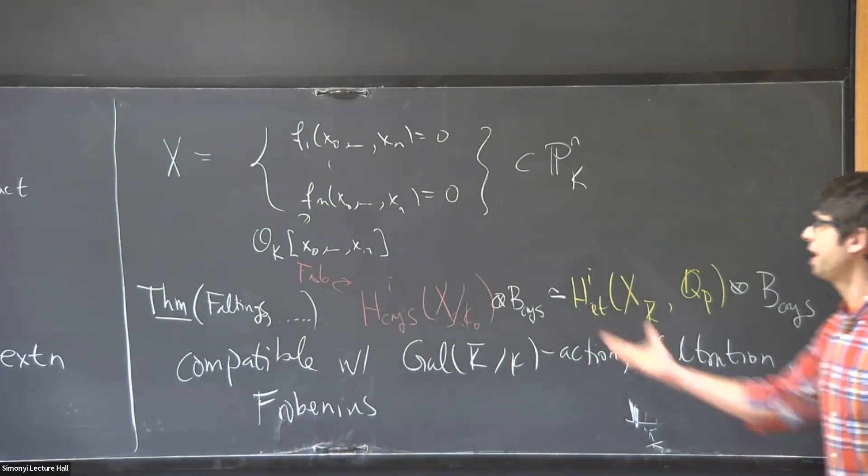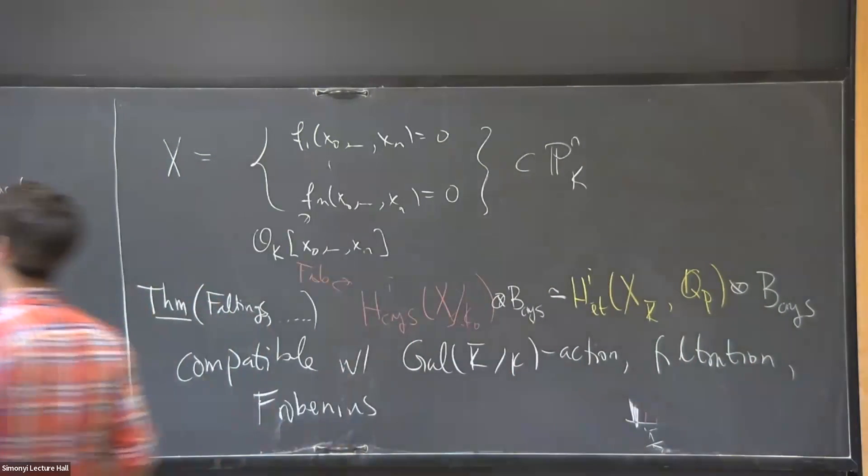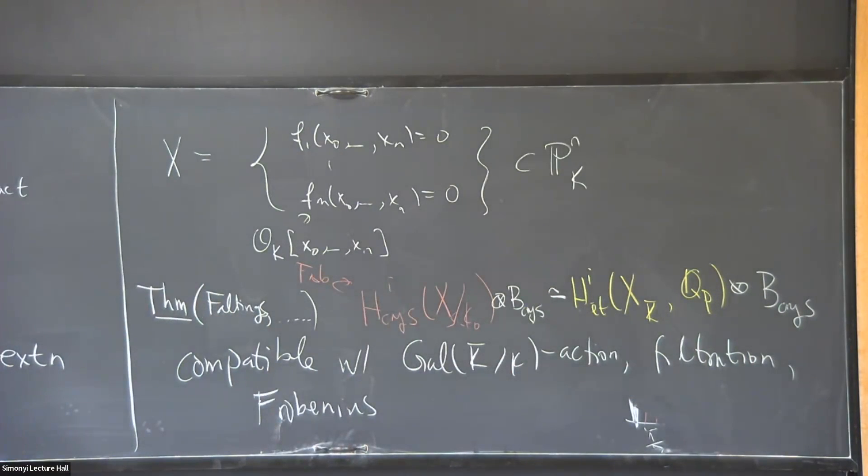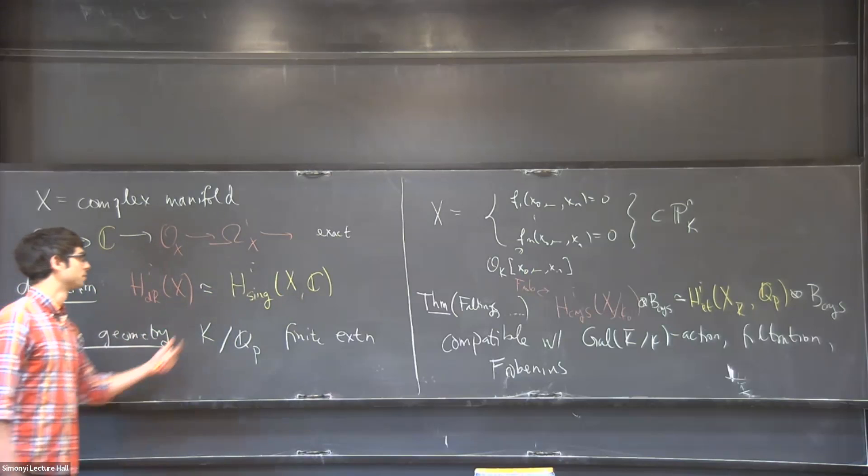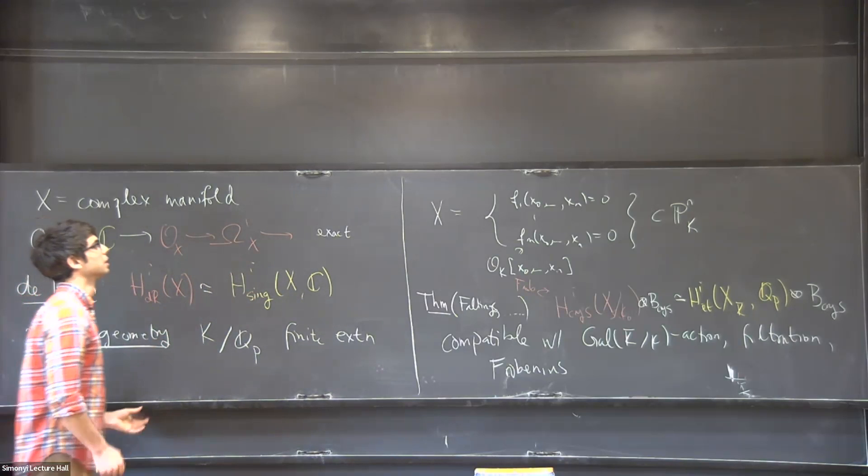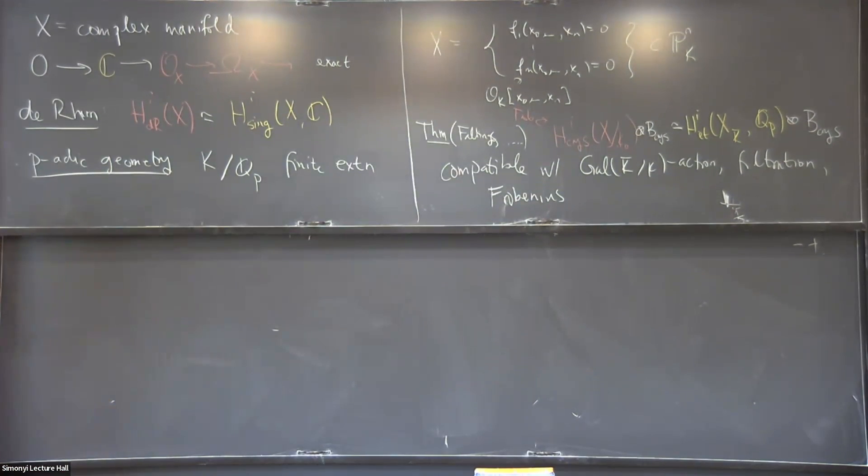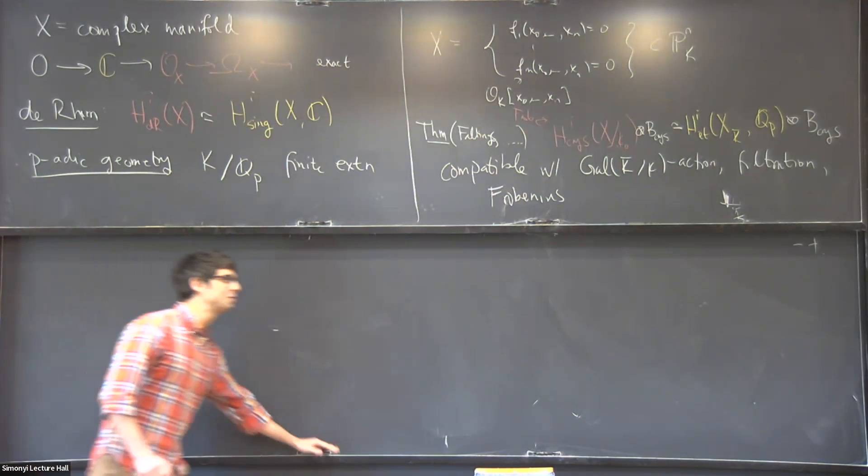So this allows us to recover the red part from the yellow part and vice versa, which was not possible over here. So here we couldn't see the filtration on the yellow side, we couldn't see the integral structure here on the right hand side. So in some sense that's the end of the story, but my talk is only five minutes over, so I can say a little bit more.